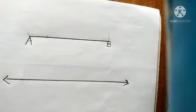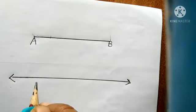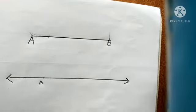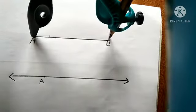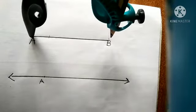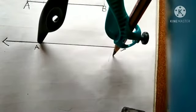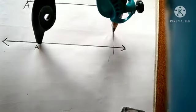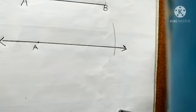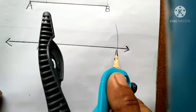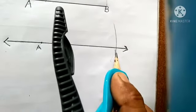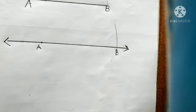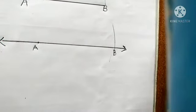We mark a point A on the given line L. Without disturbing or changing this compass measurement, we swing an arc on the line. Without disturbing the compass, we swing an arc like this and mark the point B. So this is the line segment AB, and it is the copy of the given line segment AB.